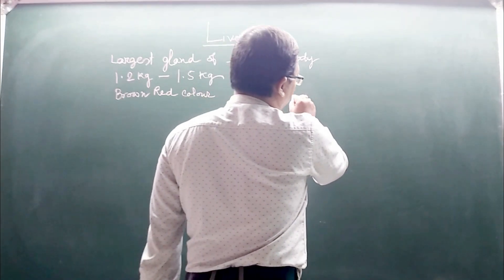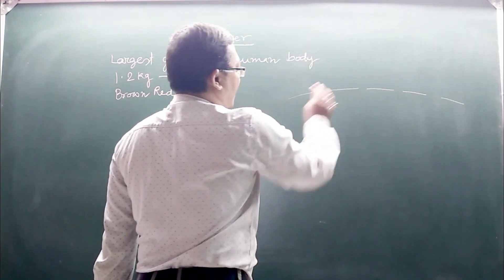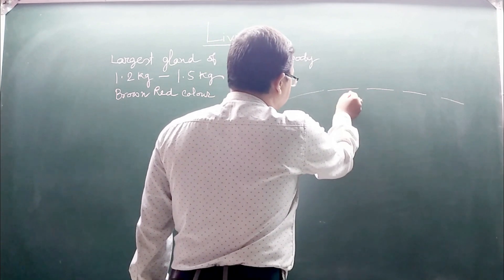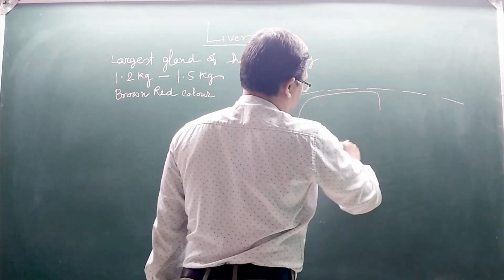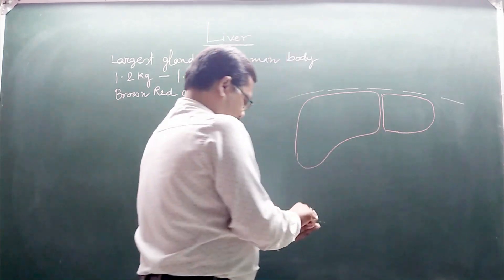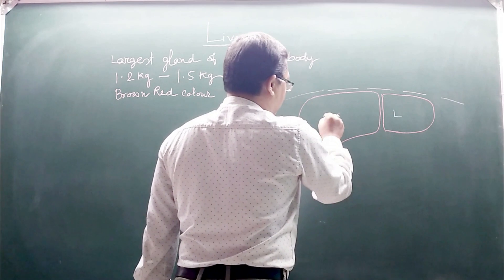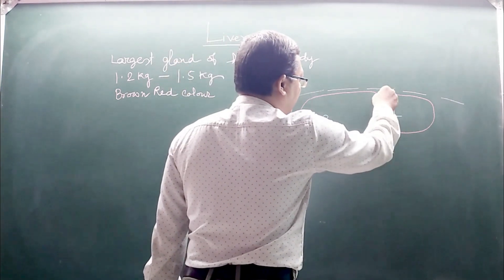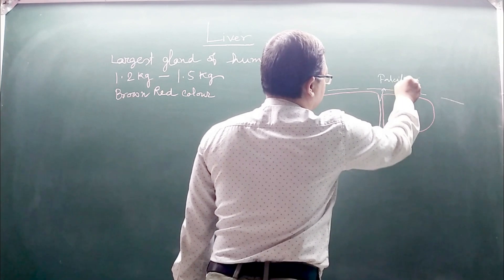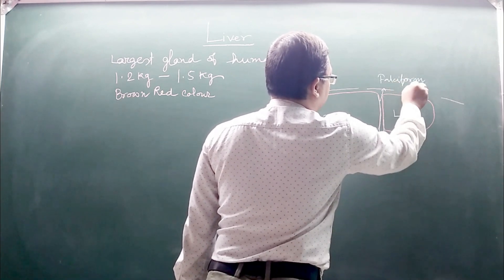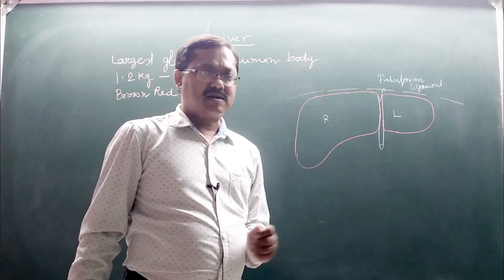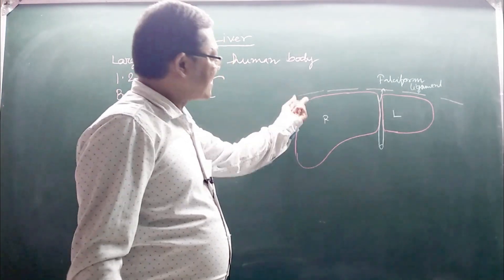The liver is present just below the diaphragm. The left lobe and the right lobe are connected by a round ligament called the falciform ligament. Different lobes are also present on the right back, dorsal side of the liver.